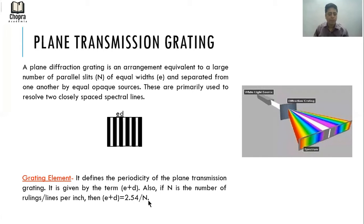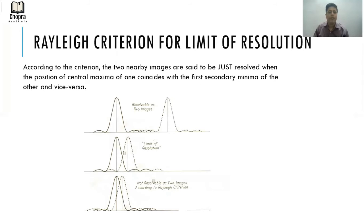Next important topic is Rayleigh criterion for limit of resolution. As I said, you use plane transmission grating to resolve two closely spaced lines. What do we actually mean by resolving something or what is the limit of resolution?